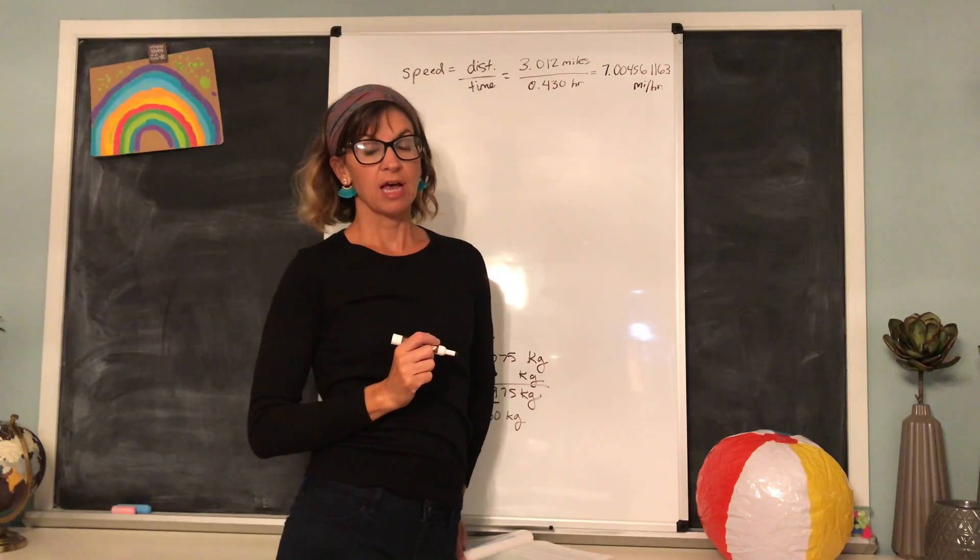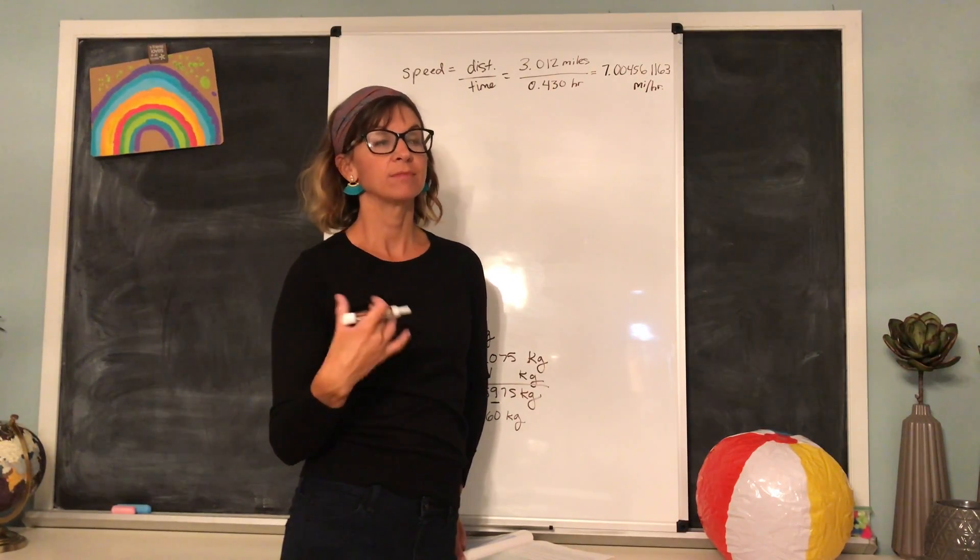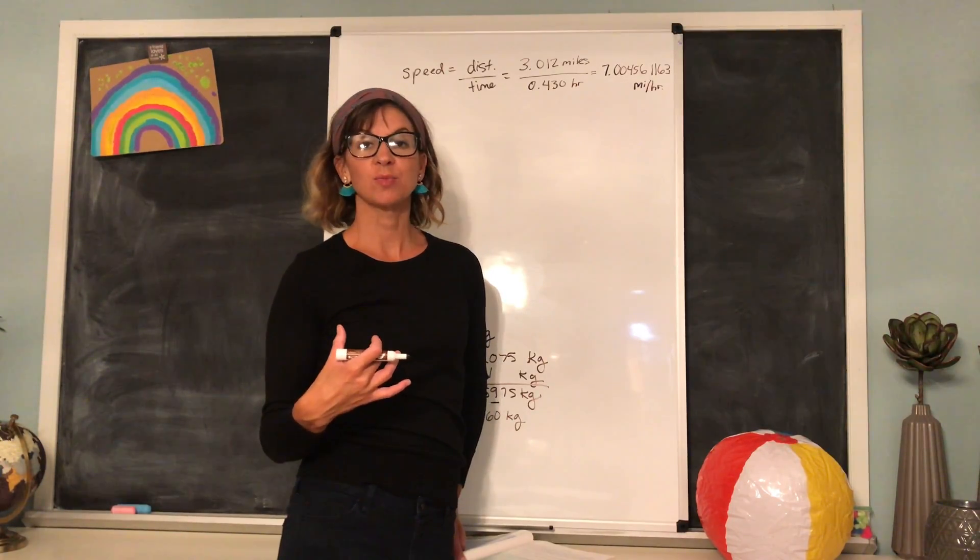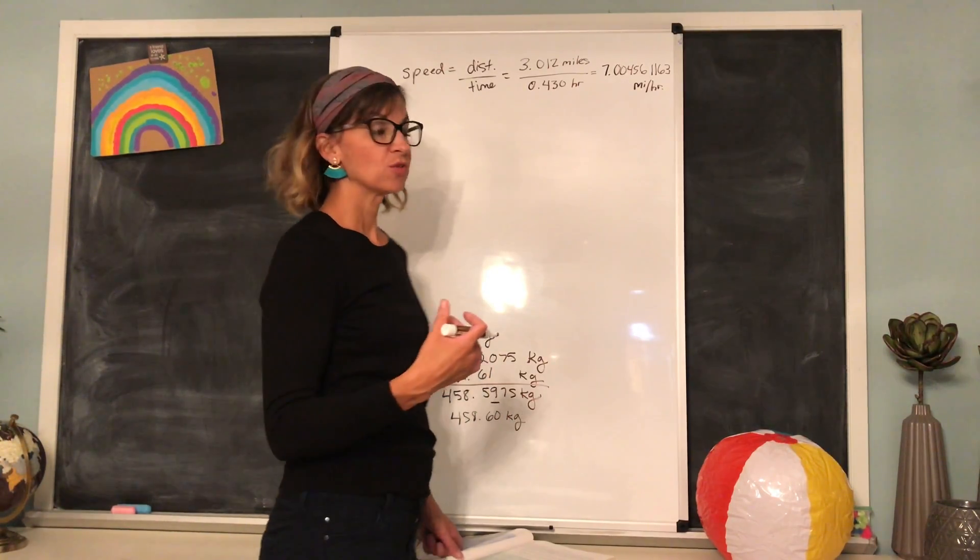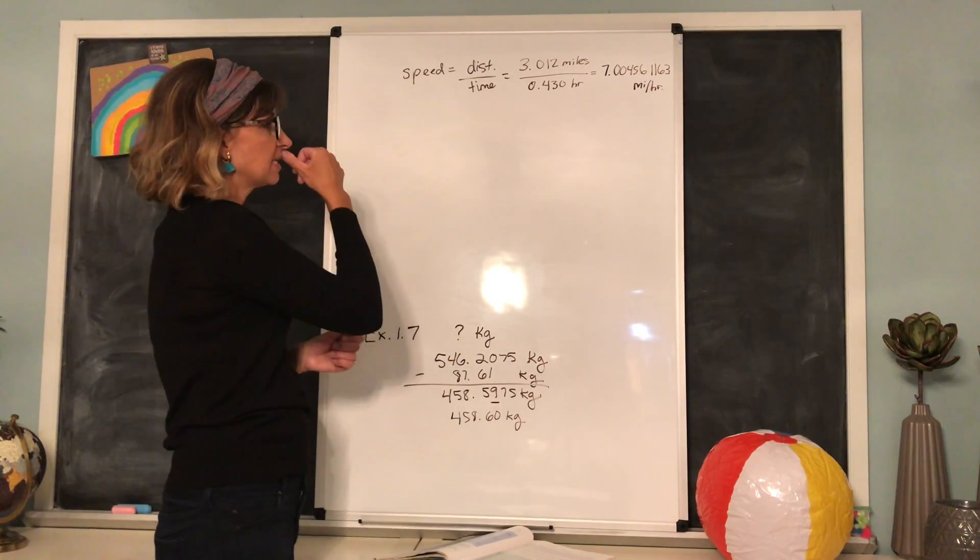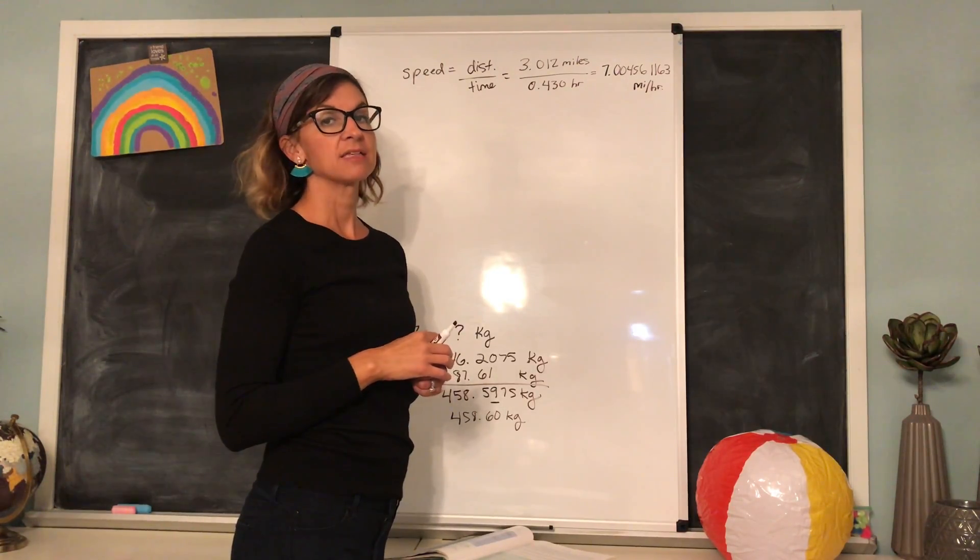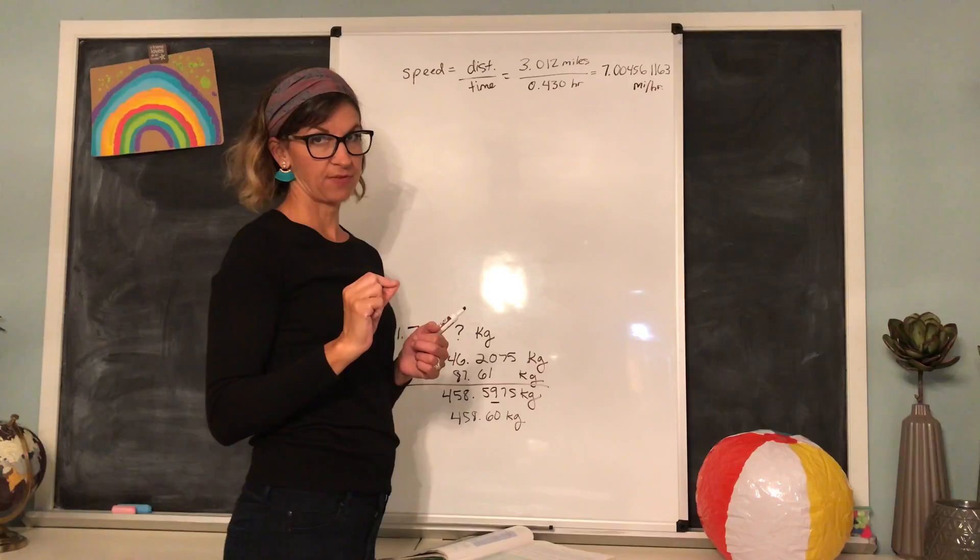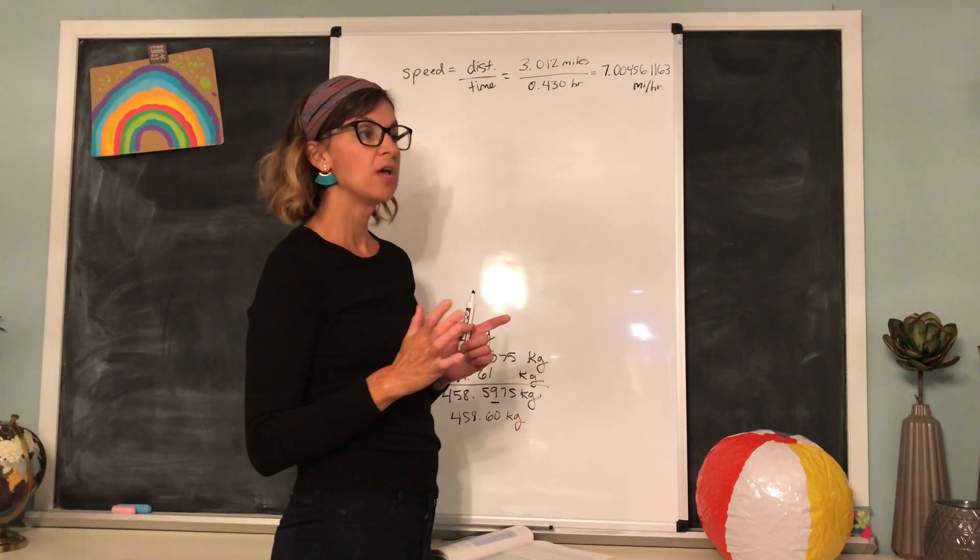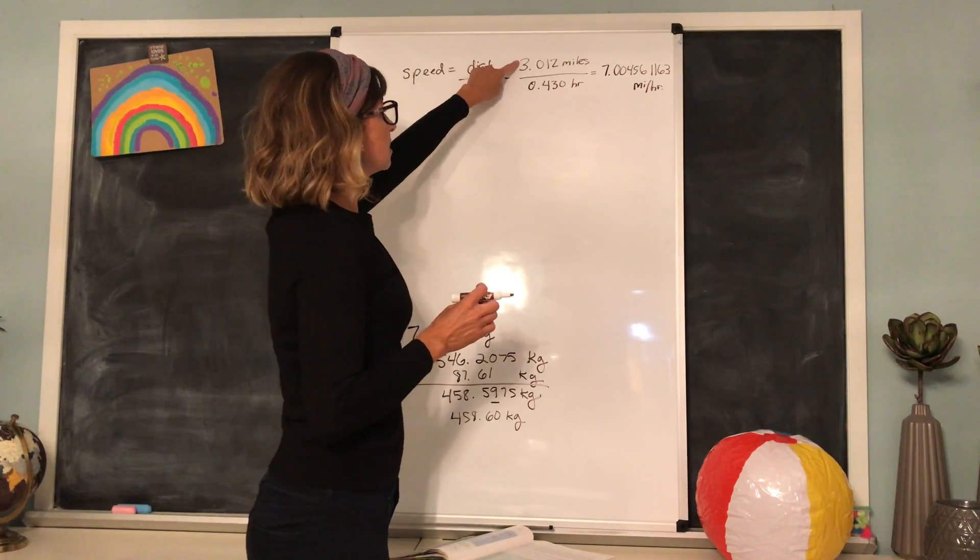So is that the answer? Well, if you wrote this down on a test, I would give you one point for getting almost the right answer, but you would not get your point for having the correct number of significant figures. When multiplying or dividing with significant figures, we have to look at the measurement that has the least number of significant figures. This time we're not looking at what decimal place the precision falls to, but we're looking at how many significant figures.